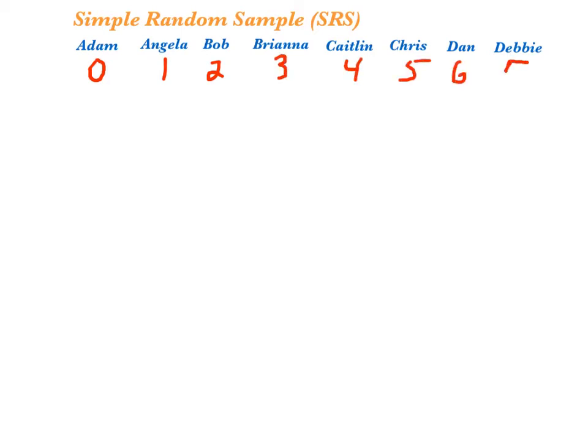Consider these 8 names to be our population. We'll number them 0, 1, 2, 3, 4, 5, 6, and 7. So our population is labeled 0 to 7, and we have 8 members in our population.